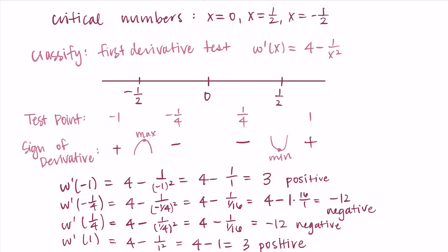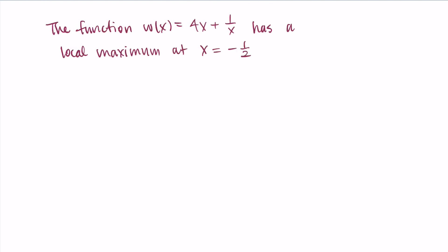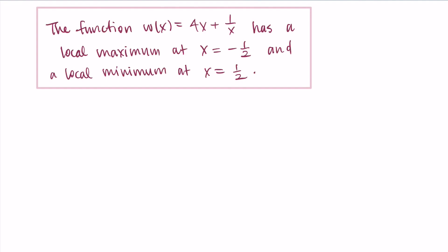So our final answer: the function w(x) = 4x + 1/x has a local maximum at x = −1/2 and a local minimum at x = 1/2. We've completed both tasks — finding and classifying the critical numbers. Thanks for watching, and I'll talk to you in the next one.